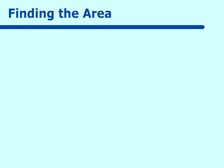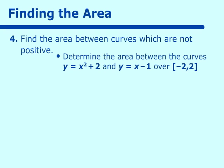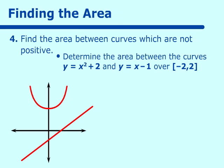Let's go on to another type. Find the area between curves which are not positive; they go from positive to negative. Determine the area between the two curves, y is equal to x squared plus 2 and y is equal to x minus 1 over the interval negative 2 to 2. Again, these are fairly simple to draw. x squared plus 2 looks something like this, and y equals x minus 1 looks something like this. We want to go from a value of negative 2 to positive 2.